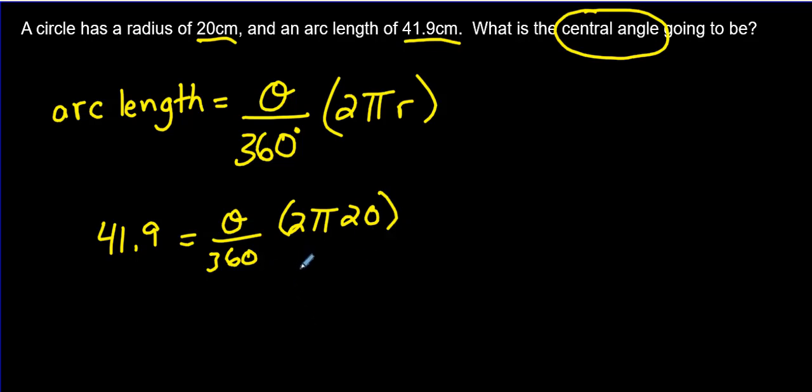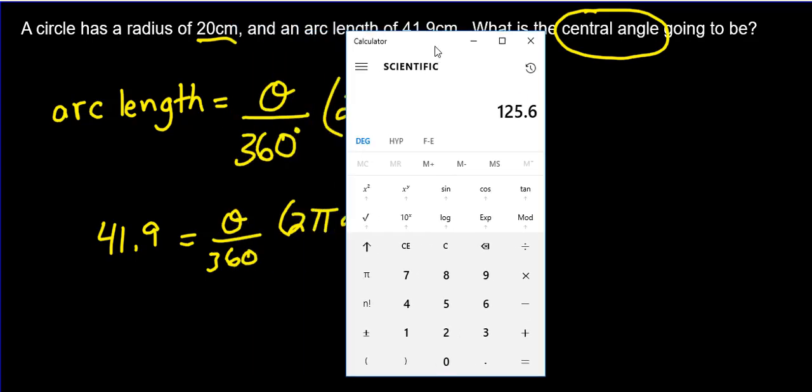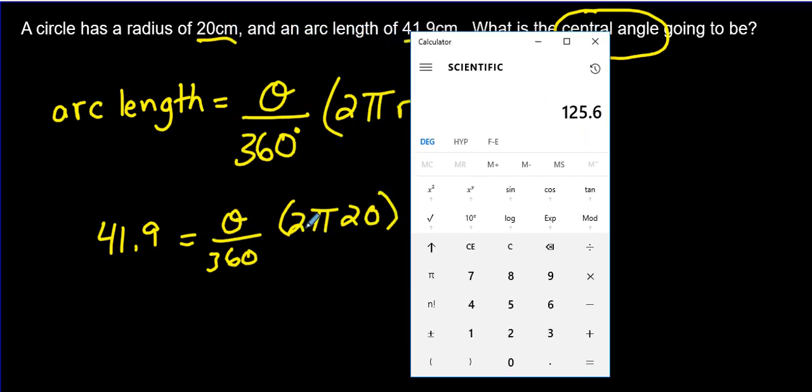How would we solve this? It's all just algebra now, folks. There's different ways to do it. You could take 2 times 3.14 times 20. 2 times 3.14 times 20 equals, and then there it is, and see we have the 360 down here. So that's like saying divided by 360. Divided by 360. You get this crazy decimal.